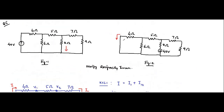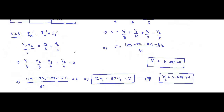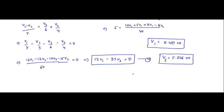We are interested in calculating i3 dash, the current flowing through the 4 ohm resistor. i3 dash equals V2 divided by 4, which is 5.026 divided by 4, giving i3 dash equals 1.2565 ampere.